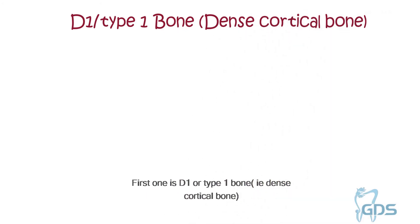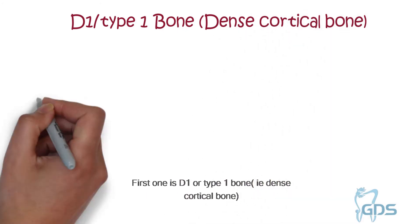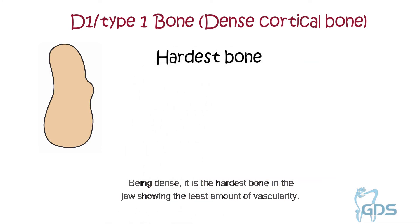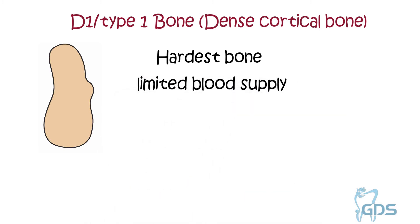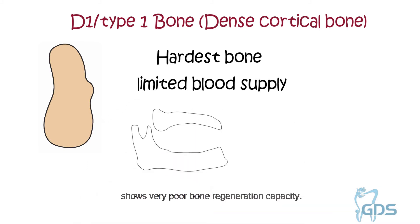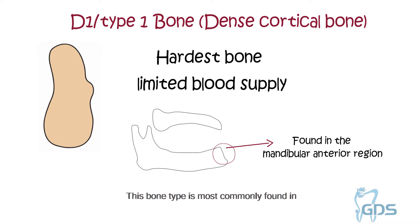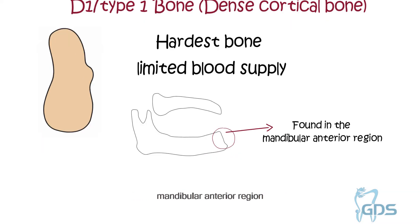The first type is D1, or type 1 bone, i.e. dense cortical bone. This homogeneous compact bone contains almost no trabecular bone. Being dense, it is the hardest bone in the jaw, showing the least amount of vascularity. Because of limited blood supply, this bone shows very poor bone regeneration capacity. This bone type is most commonly found in the mandibular anterior region.